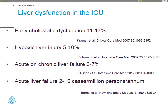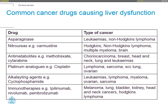Acute liver failure is rarely seen in general ICUs. I work in a cancer ICU, so what we see a lot of is liver dysfunction as a result of chemotherapy. We are often faced with patients who've had multiple rounds of chemotherapy, and these are some of the drugs that commonly cause liver dysfunction in the ICU. The novel agents are particularly interesting because there are a lot of advances in immunotherapies now, really making changes to melanoma treatment.